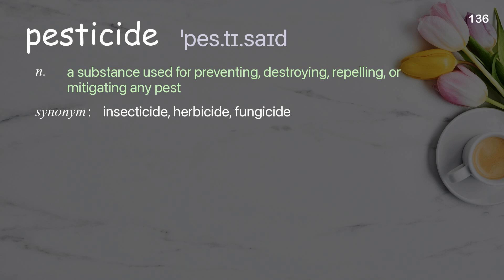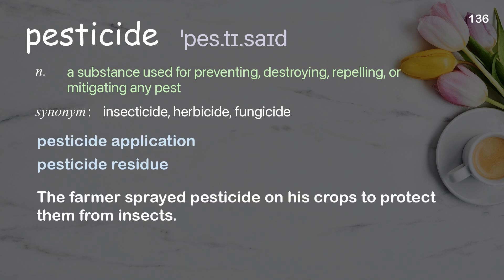Pesticide: a substance used for preventing, destroying, repelling, or mitigating any pest. Examples: pesticide application, pesticide residue. The farmer sprayed pesticide on his crops to protect them from insects.